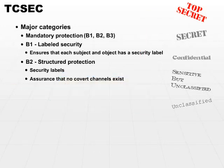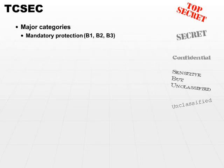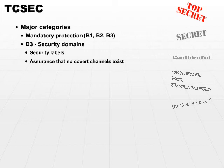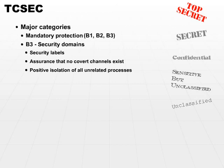Last but not least in the mandatory protection category is Category B3, security domains. Security domain systems require security labels, plus the assurance that no covert channels exist, plus a positive isolation of all unrelated processes. It ensures that no process could write to or read from the memory location or memory area of another process. This ensures that any process running in privileged mode cannot affect any process that's not running in privileged mode, and vice versa.